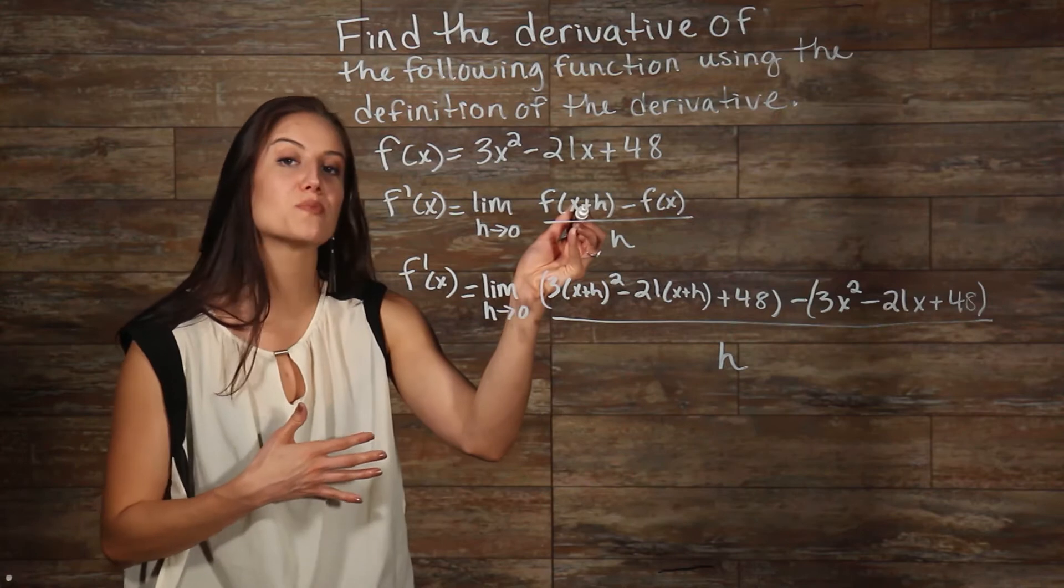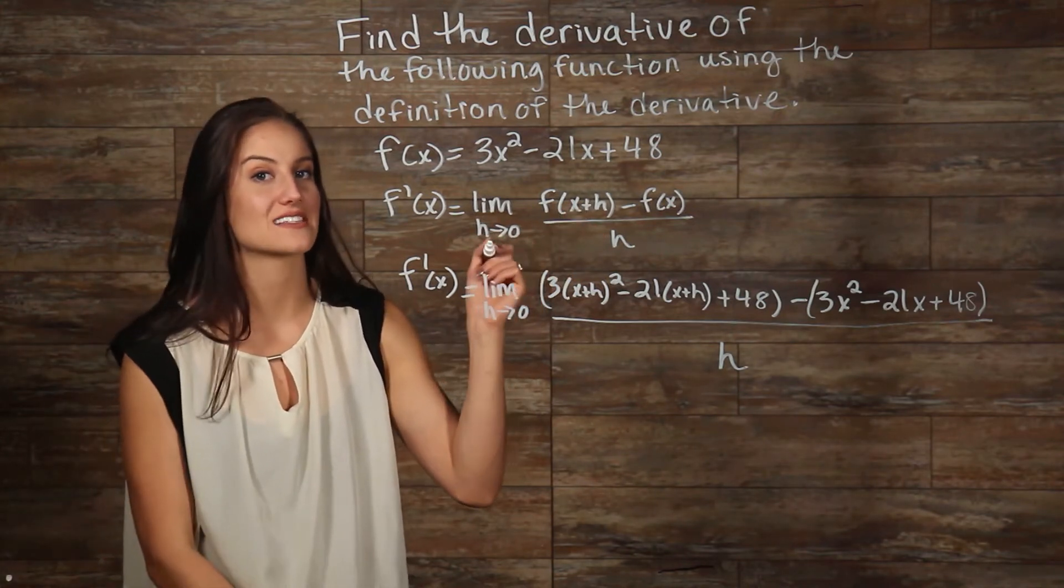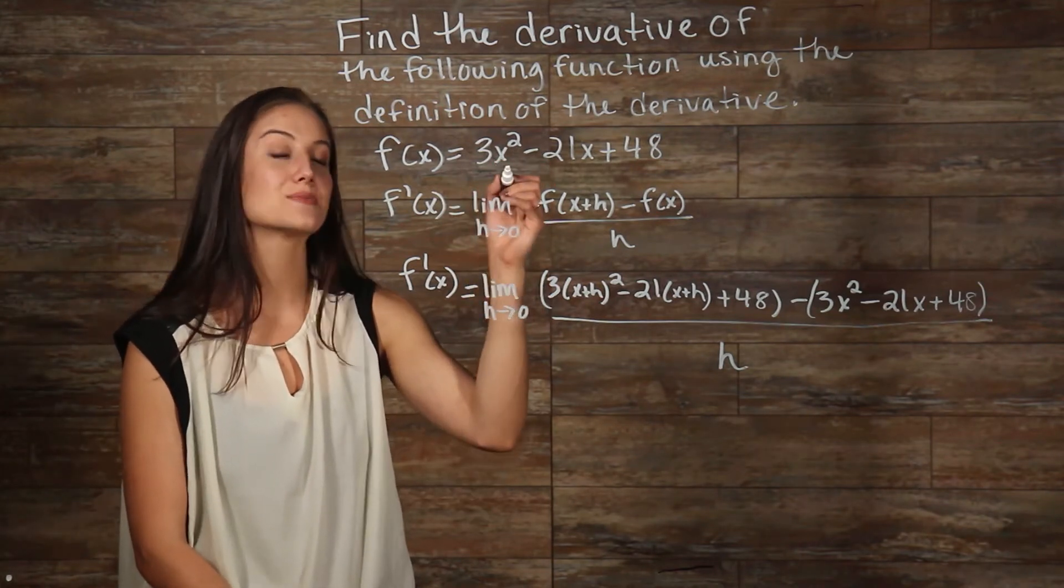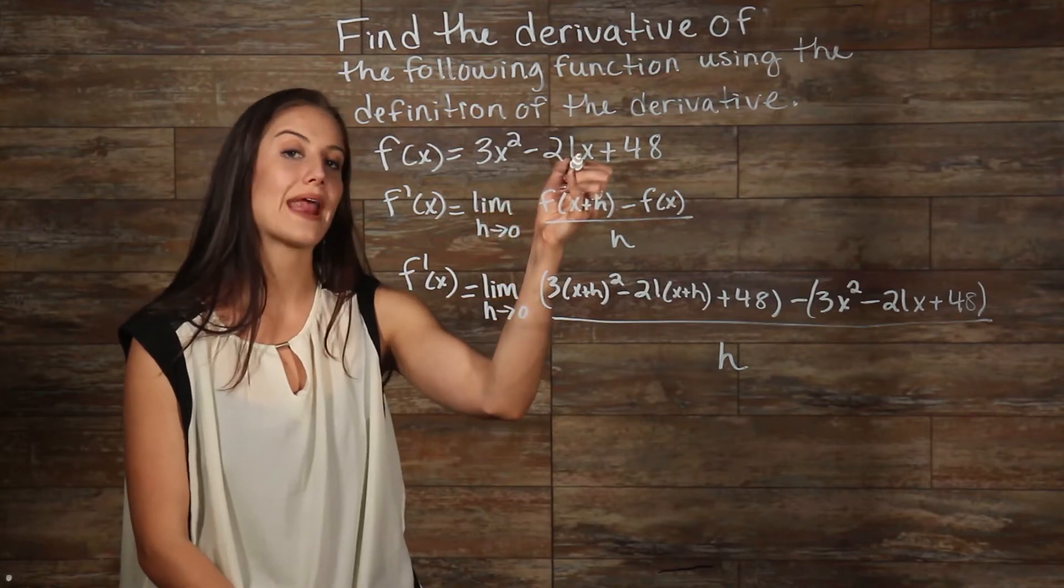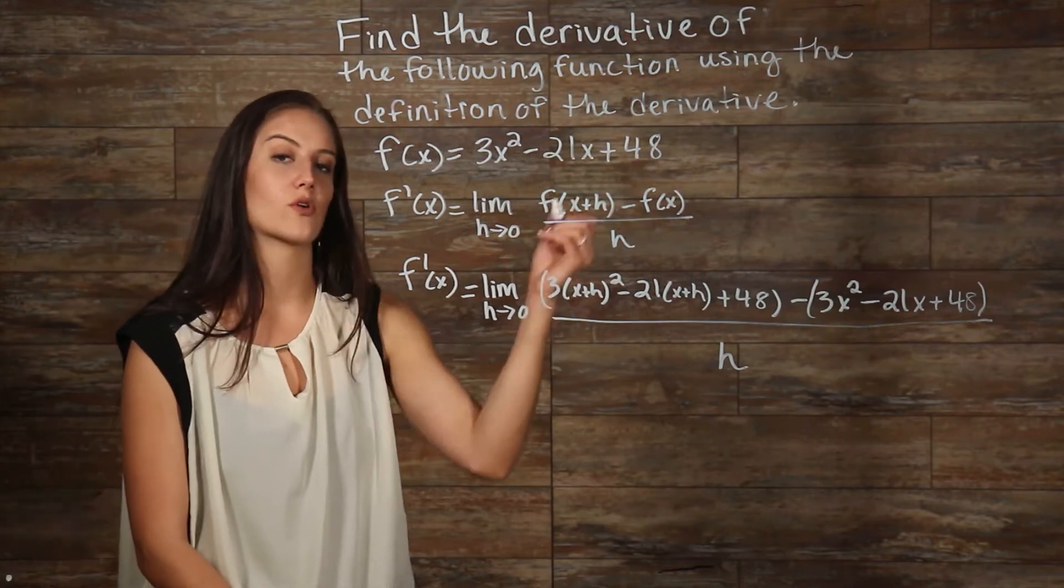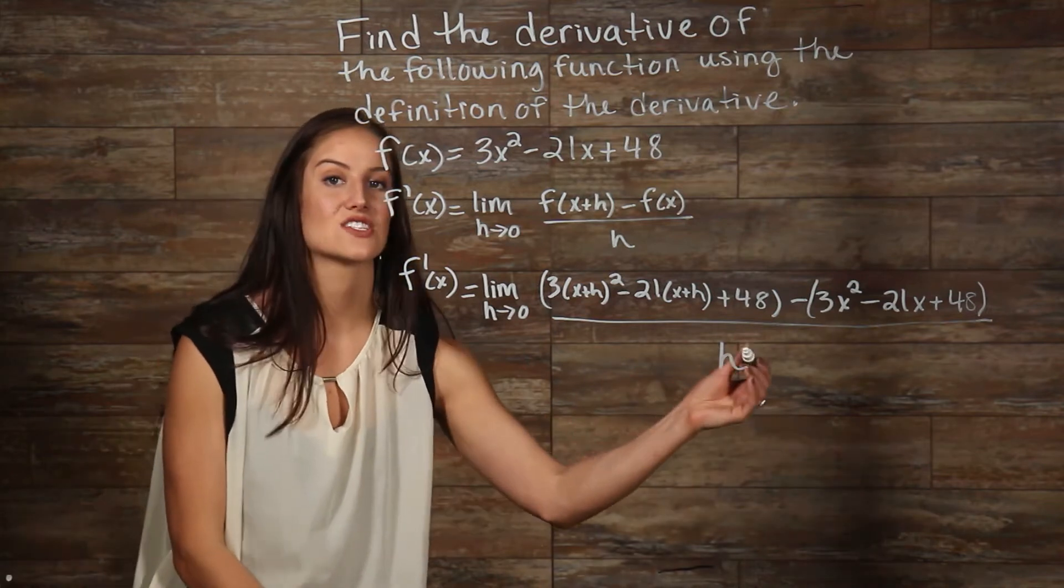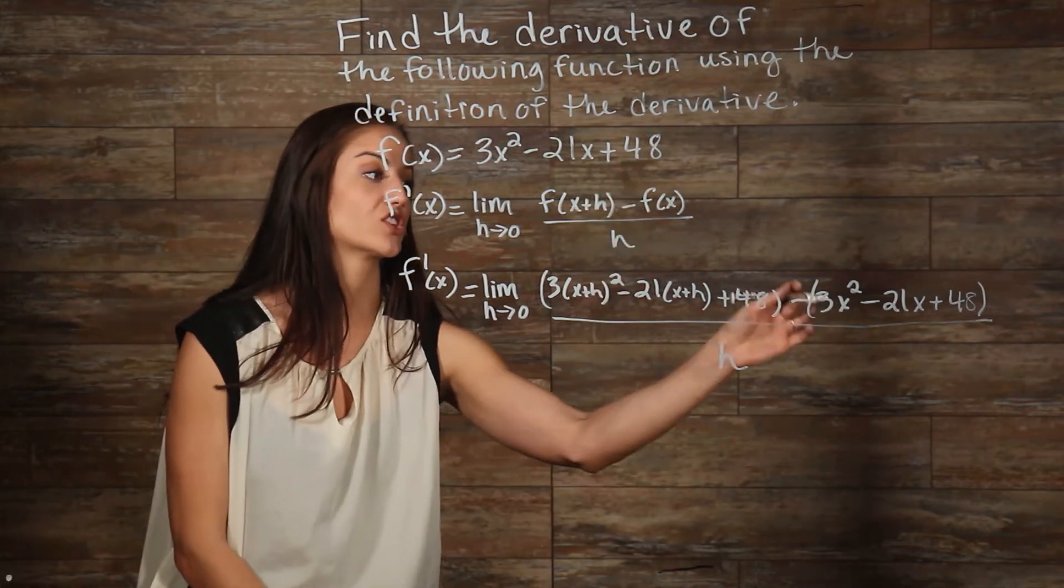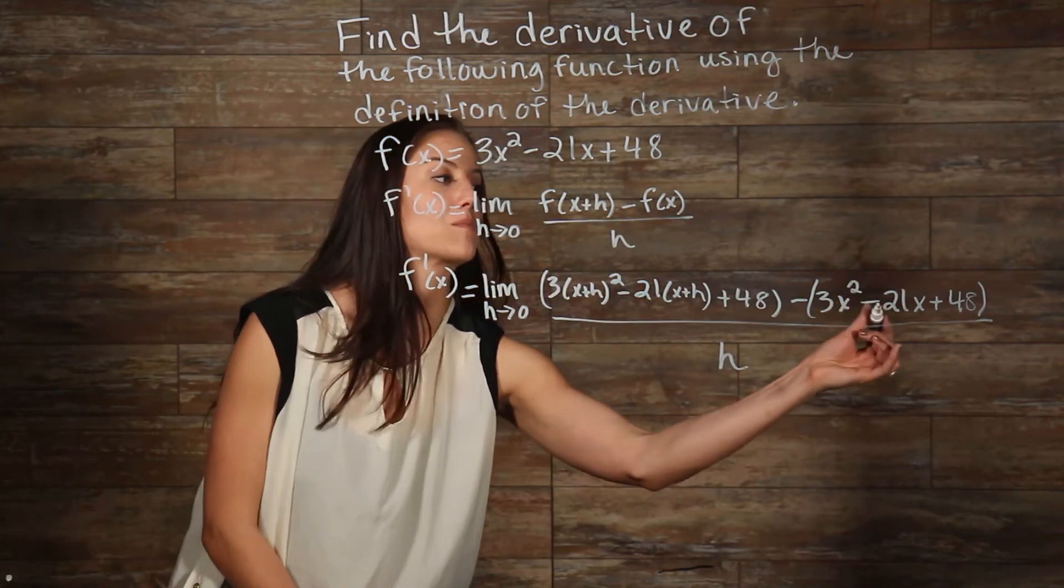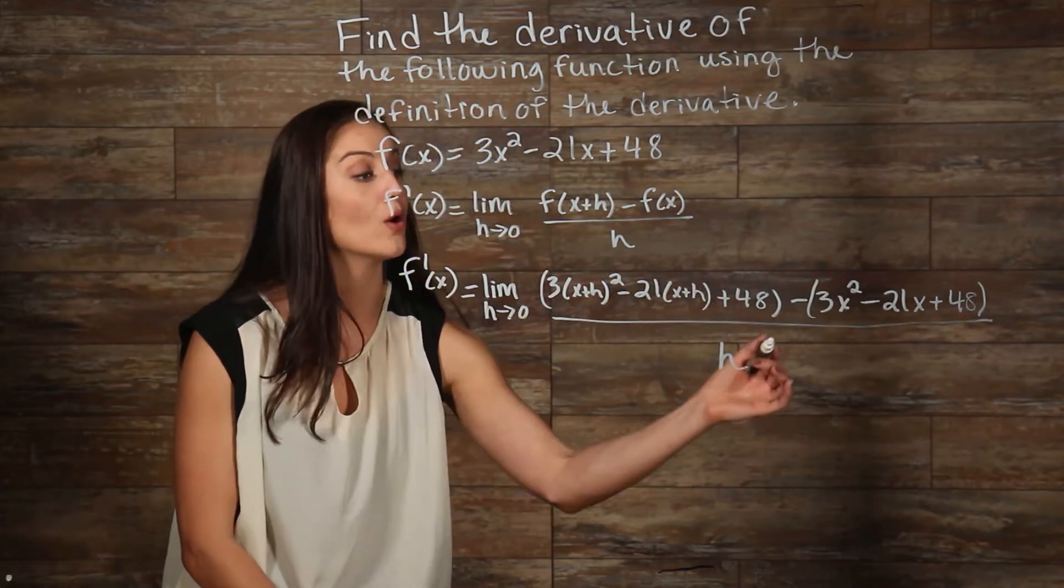We can see here in the first part of our definition that it's telling us to plug in an x plus h everywhere there is an x in the function. Our 3x squared here is going to get changed to 3 times x plus h squared, and our negative 21x is going to get changed to negative 21 times x plus h, and 48 is going to stay the same because there is no x variable in the front. Now, it's telling us to subtract our original f function from our f. So, we subtract our 3x squared minus 21x plus 48 from our f function all over h.